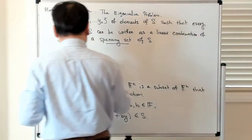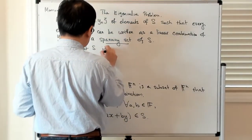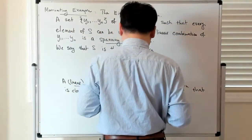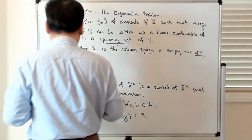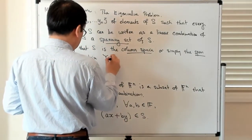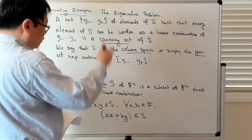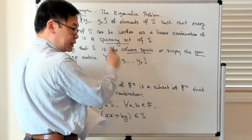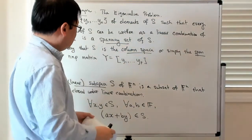So S is the column space, or simply the span, of an N by P matrix Y, viewed as columns Y1 to Yp. You think of it as P vectors, each an N-vector, and you look at the space spanned by these columns. We say Y spans S.